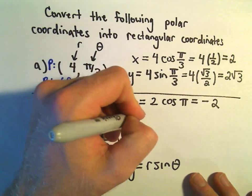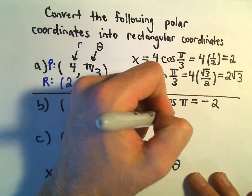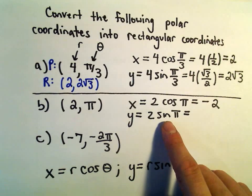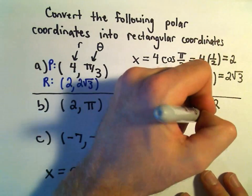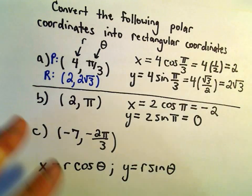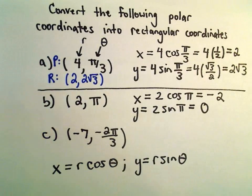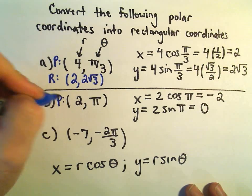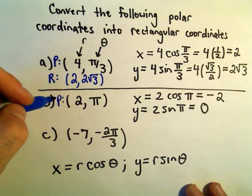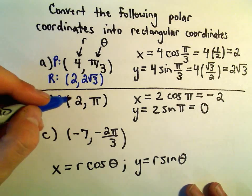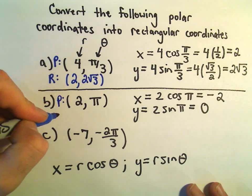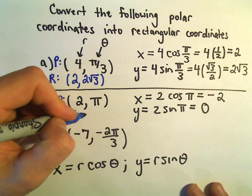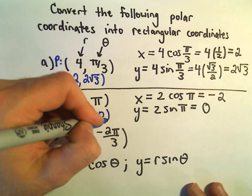y is going to be 2 times sine of pi. Sine of pi is 0, so we'll get 2 times 0, or 0. So in Cartesian form, or rectangular coordinates, the polar form was (2, π), so the rectangular coordinates are given by (-2, 0).